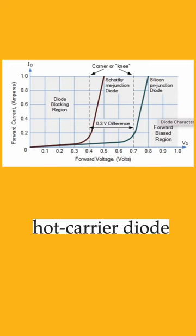Use of Schottky diode: as we know, the Schottky diode has a very low forward voltage of around 0.3 to 0.4 volts or even lesser. Due to this characteristic, it is used for several purposes.